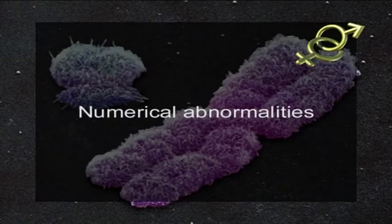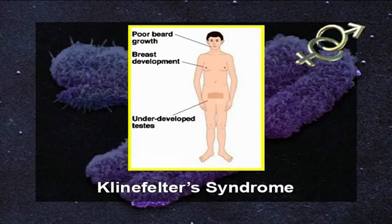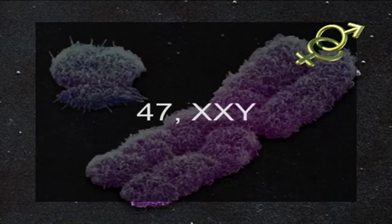Now we will discuss numerical abnormalities of X and Y chromosomes. Number one is Klinefelter syndrome. Klinefelter syndrome is caused by the presence of one or more extra copies of the X chromosome in males. Extra genetic material from the X chromosome interferes with male sexual development, preventing the testicles from functioning normally and reducing the levels of testosterone. Males with Klinefelter syndrome typically have one extra copy of the X chromosome in each cell, for a total of two X chromosomes and one Y chromosome — that is, 47 XXY.